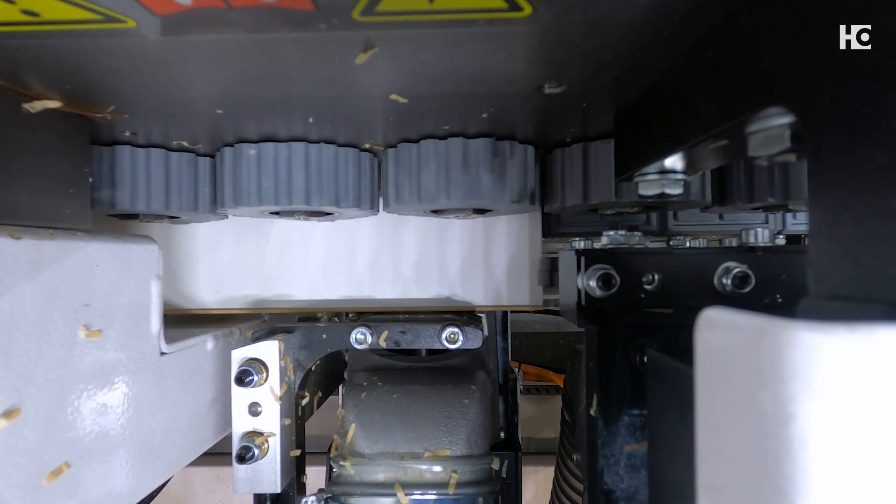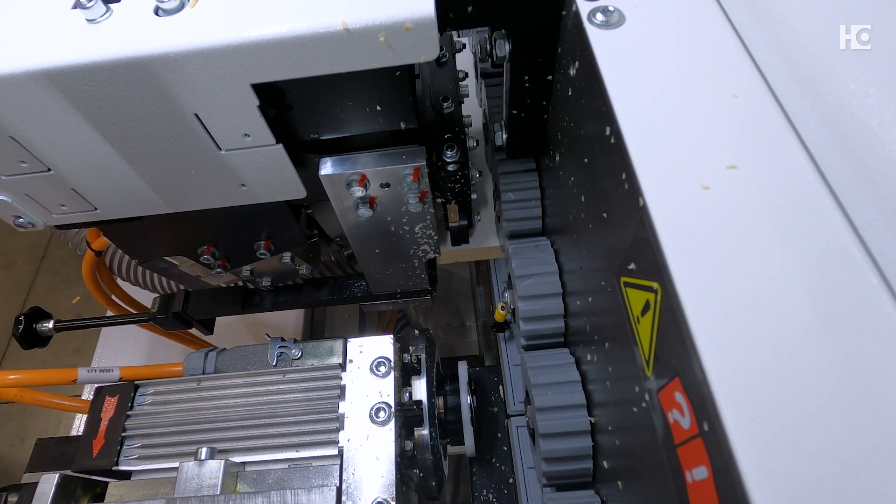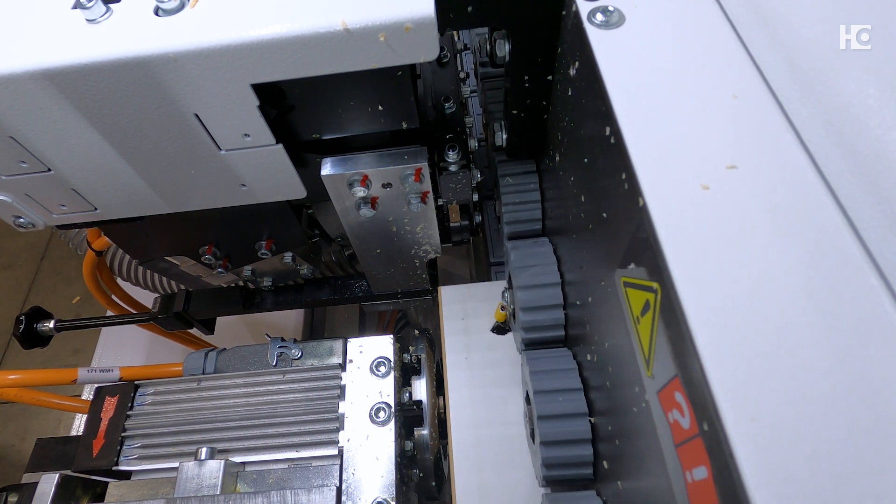The fine trim station processes the top and bottom of the edge banding. The nested copy system on top allows processing of workpieces with hinge holes.